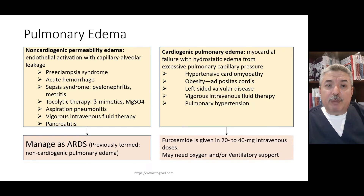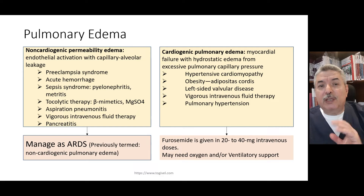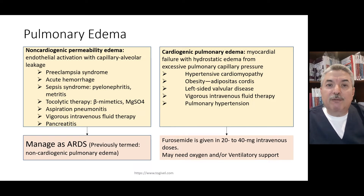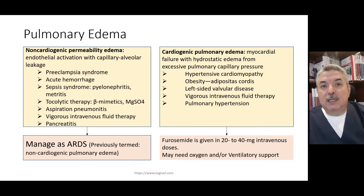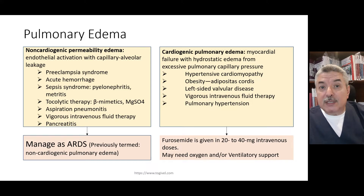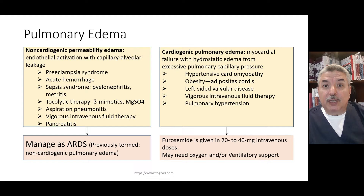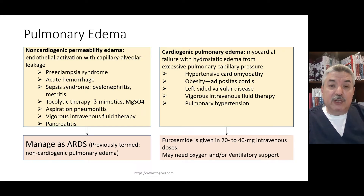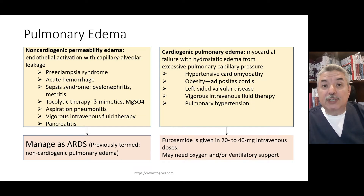If it's non-cardiogenic pulmonary edema, there is a treatment we will discuss. But if it's cardiogenic, the main treatment is frusemide — giving Lasix to drain excess fluid from the body. You monitor fluid balance by attaching the patient to a central venous pressure monitor or monitoring pulmonary artery pressure through invasive monitoring. Sometimes pulmonary edema is so severe you need oxygen support and CPAP to increase oxygen delivery to the blood.